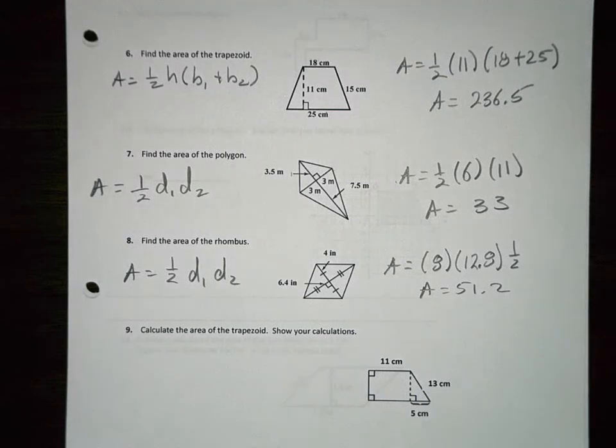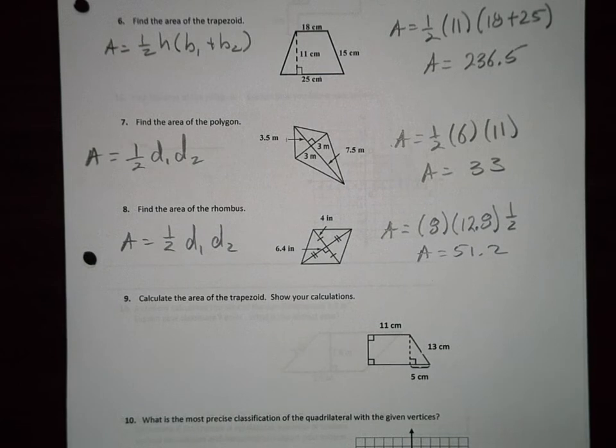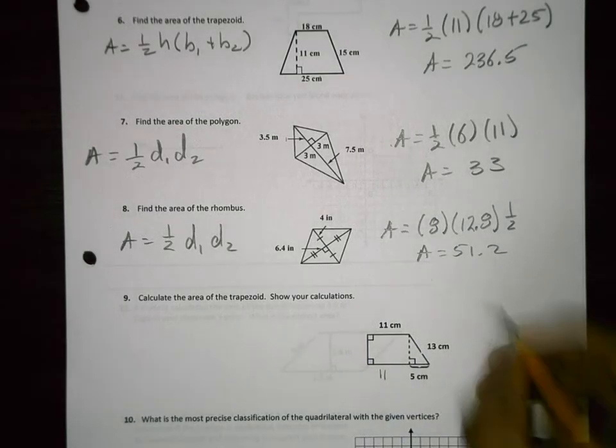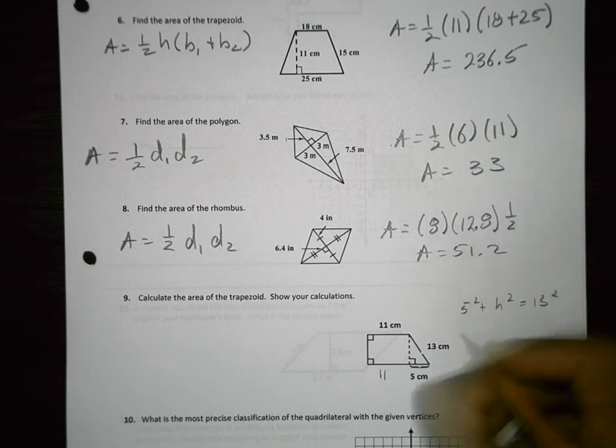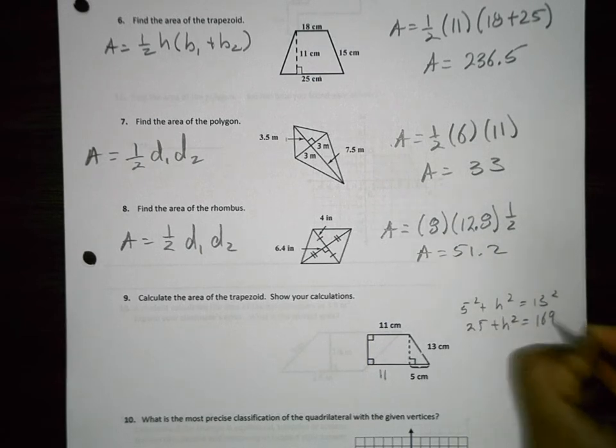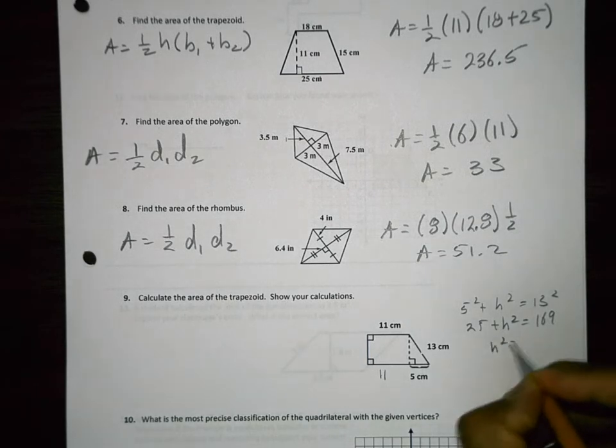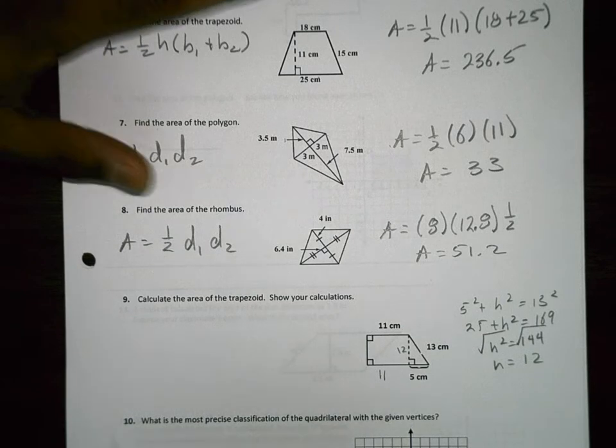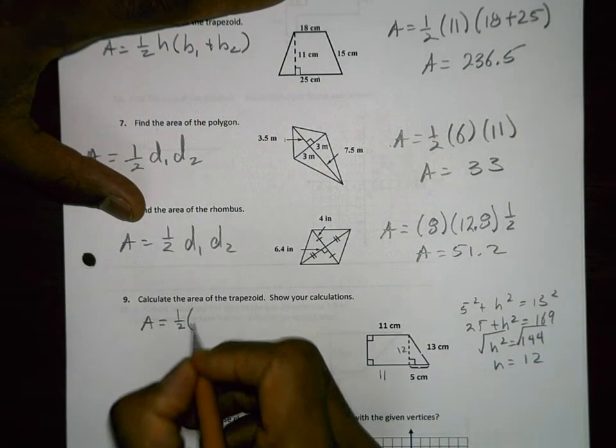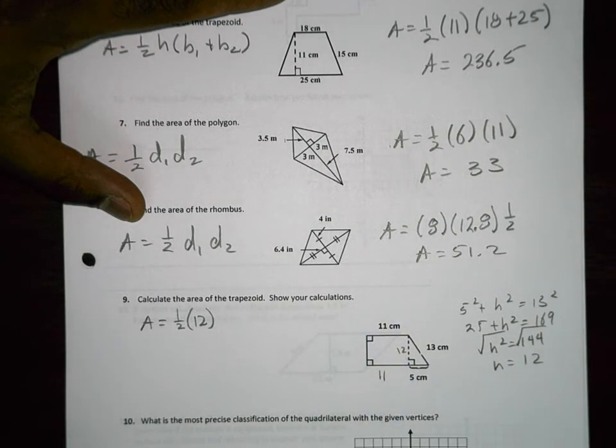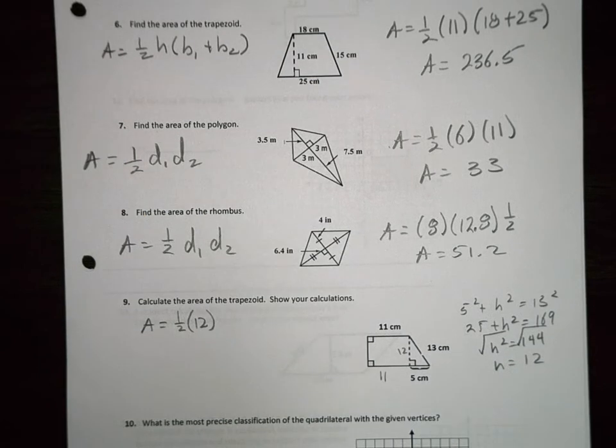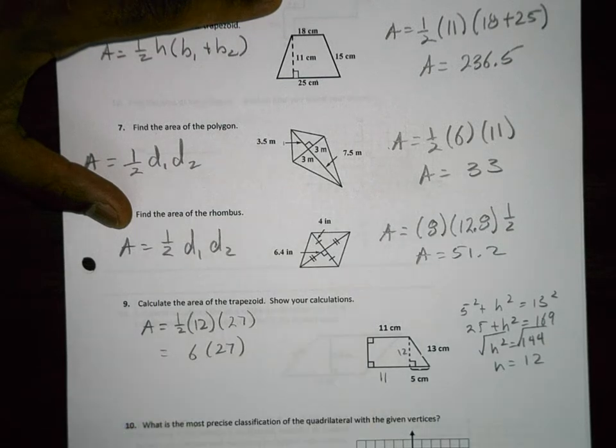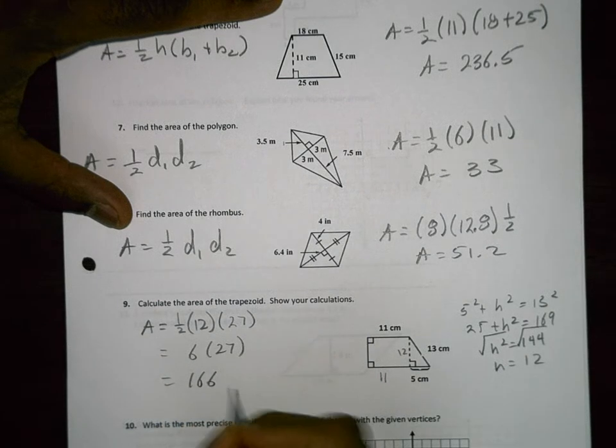Find the area of the trapezoid. So what's missing here is I'm missing the height. This piece is also 11 down here. So this is a 90 degree triangle. I'm going to use Pythagorean theorem. So 5 squared plus H squared equals 13 squared. That's 25 plus H squared equals 169. Subtract 25 from both sides, that's 144. Take the square root, and H equals 12. So the area is equal to 1/2 the height times the sum of the bases. So this one's 16 plus 11, which is 27. 6 times 27 equals 162 centimeters squared.